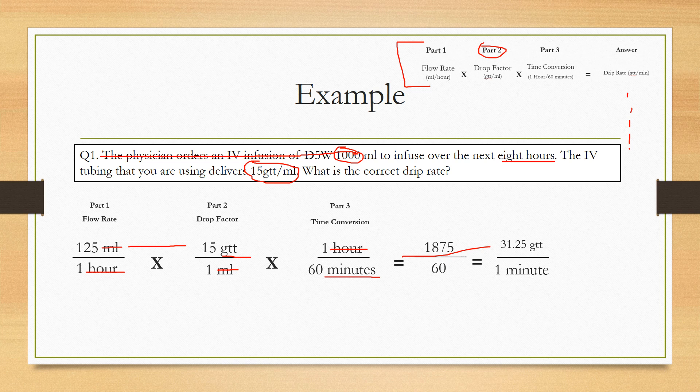You just multiply all the numerators across and multiply all the denominators across. And that's how you get this first part. But obviously we don't want it for 60 minutes. We want it per 1 minute. So all we're going to do is just simplify this. And all that is is just 1875 divided by 60.